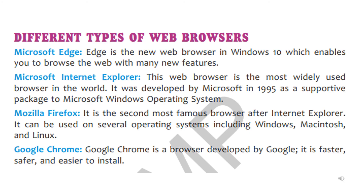Let us discuss different types of web browsers. First, Microsoft Edge — it is the default web browser of Microsoft. If you have Windows 10, it will already be on your computer. It is the new web browser of Windows 10 which enables you to browse the web with many new features. Next is Microsoft Internet Explorer — also a web browser of Microsoft, developed in 1995 and packaged with the Microsoft Windows operating system.